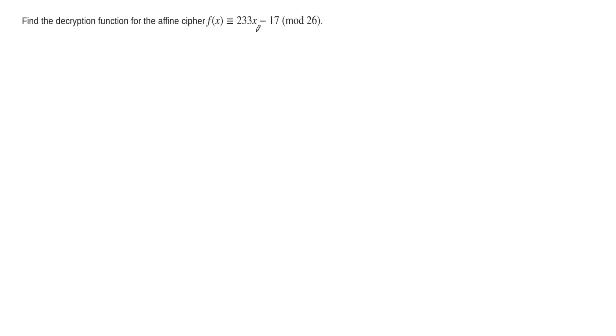So what we need to do is start by saying, okay, this function is going to give an output, that output's going to be y. That's going to be congruent to 233x minus 17 mod 26.